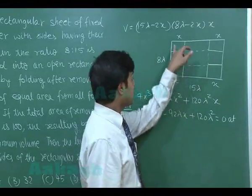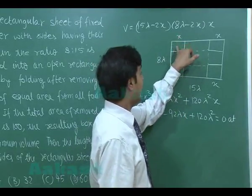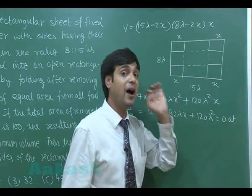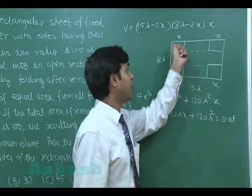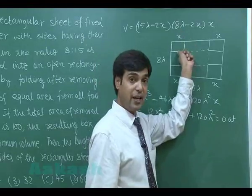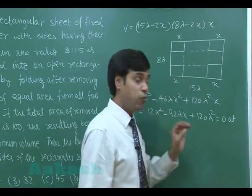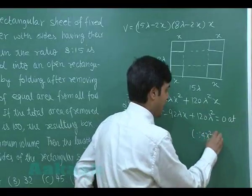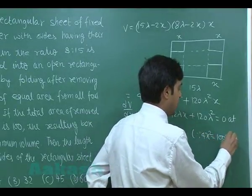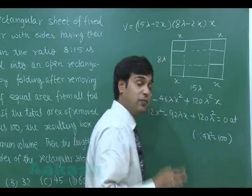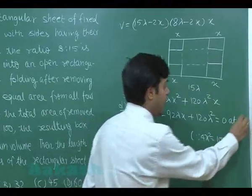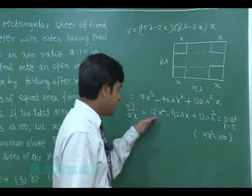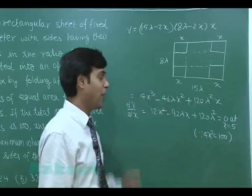At the point of maximum volume, it is given that the sum of the four removed square areas is 100. Each square has area x², so 4x² = 100, giving x = 5. So the equation is satisfied at x = 5.